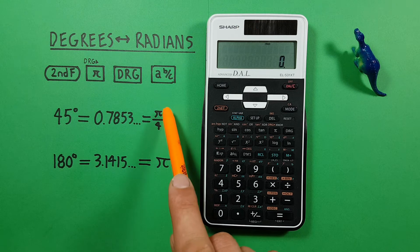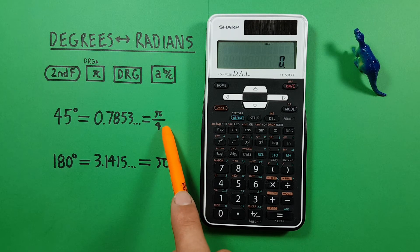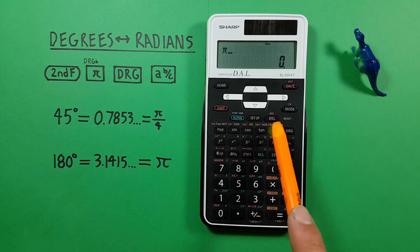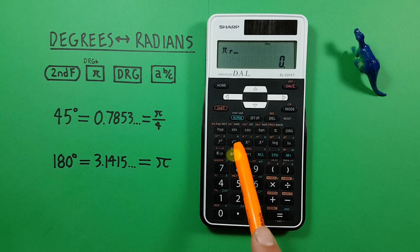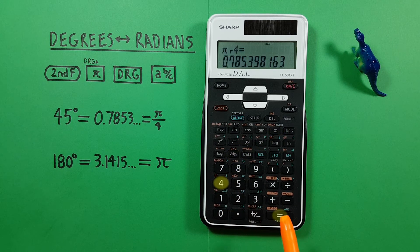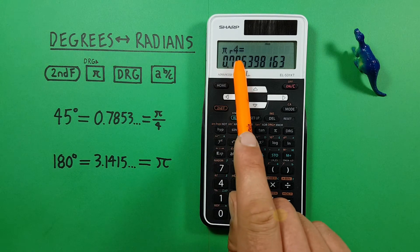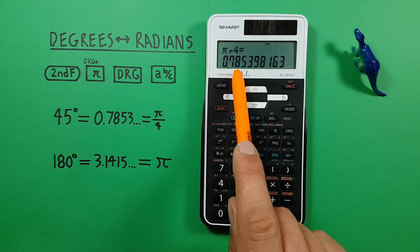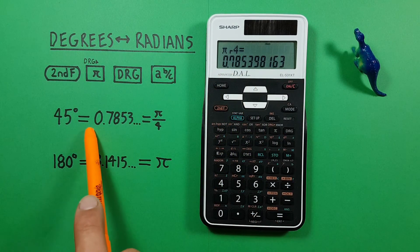We have pi over 4. So we can start by hitting the pi, then the fraction key, and then the 4. There we go. Pi over 4 is equal to 0.7853, etc., which we already found.